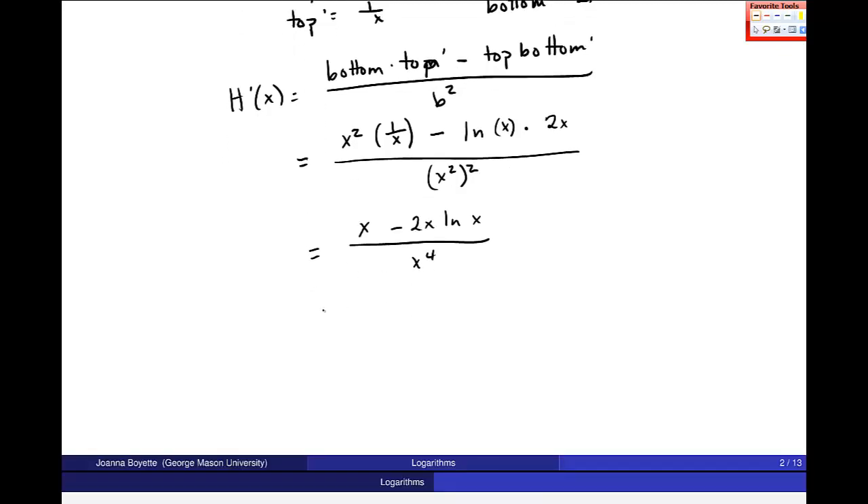Here, this first term on top, one of these x's will cancel, so I'm left with just x minus 2x natural log x over x to the fourth. I can factor an x out of that in the numerator, x times 1 minus 2 times natural log of x, x to the fourth, and this x will cancel. So I get 1 minus 2 natural log of x over x cubed.